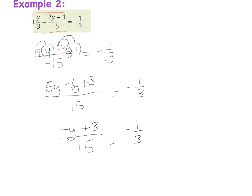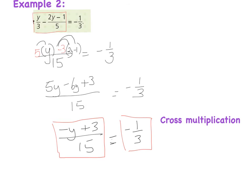At this point I have (minus y + 3) divided by 15 equal to minus 1 over 3. If you get your equation arranged so that you have one expression on each side with an equals in the middle, you can use a technique called cross multiplication, which you may have met before.